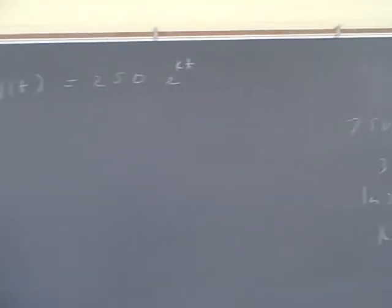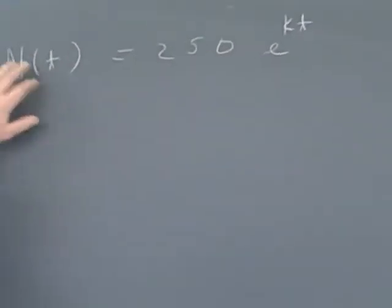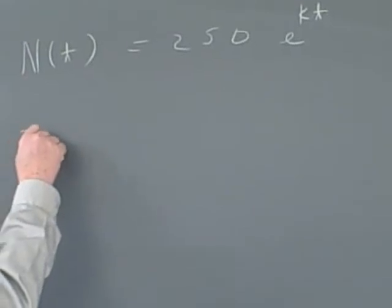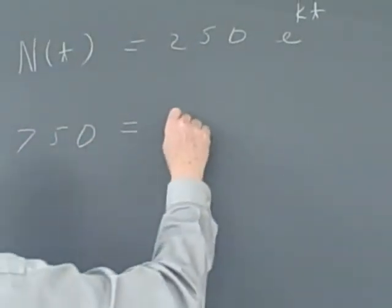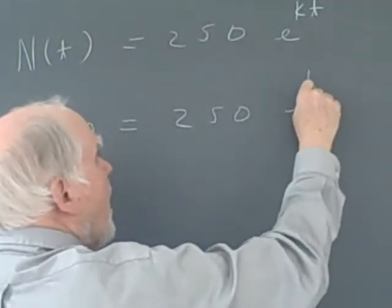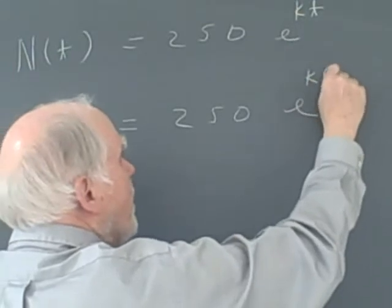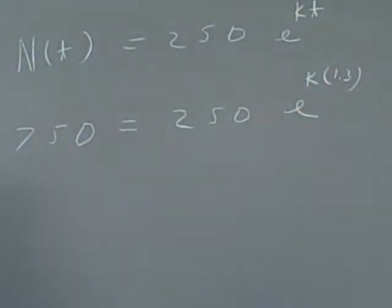We're going to move over to this board here. What do we know? The number—it says it triples, so it has to be 750 rats in 1.3 years. So that's 250, we start with e, and we don't know k.